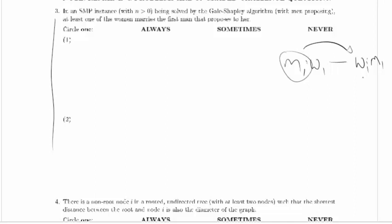Man one will propose to woman one and she will accept. So this is an example of where it's true, so we can just grab this example and I'm just going to label it one man, one woman, one proposal. So clearly she accepts the first proposal. So this is not never true.